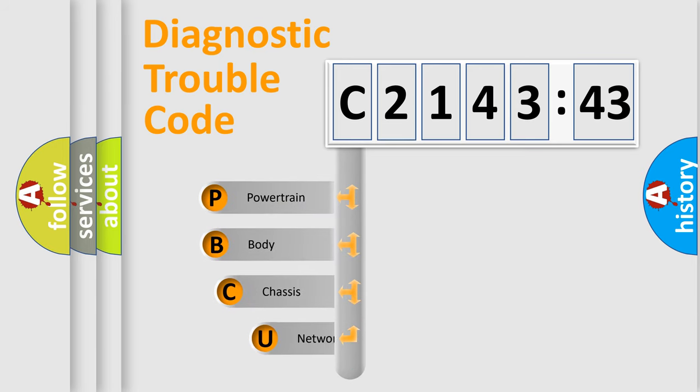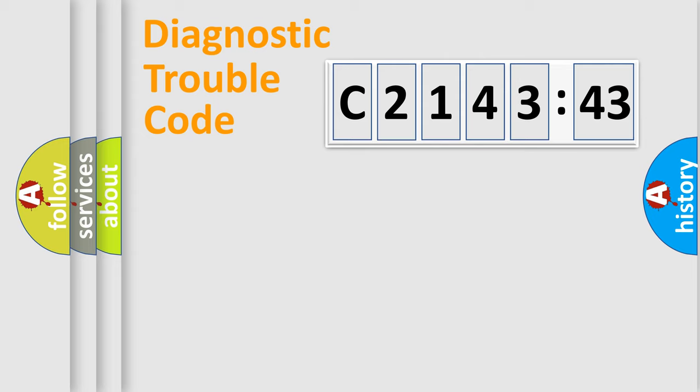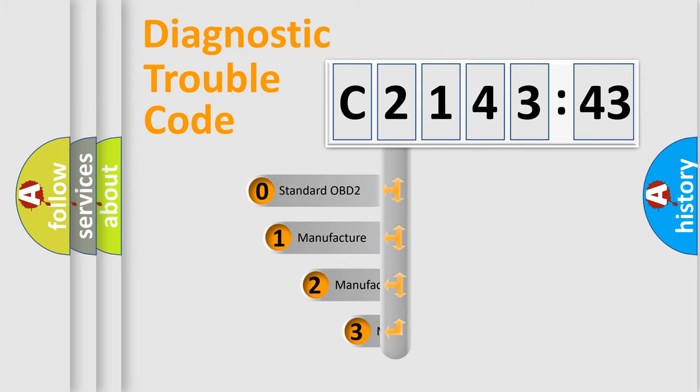First, let's look at the history of diagnostic fault code composition according to the OBD2 protocol, which is unified for all automakers since 2000. We divide the electric system of automobile into four basic units: Powertrain, Body, Chassis, and Network.